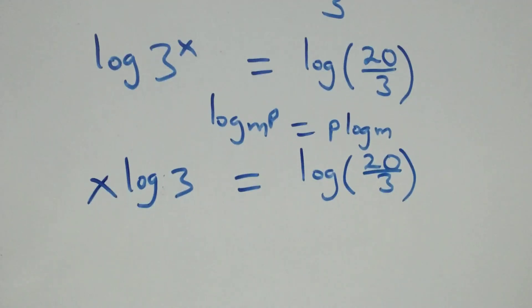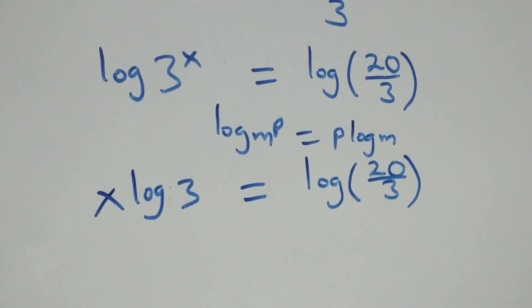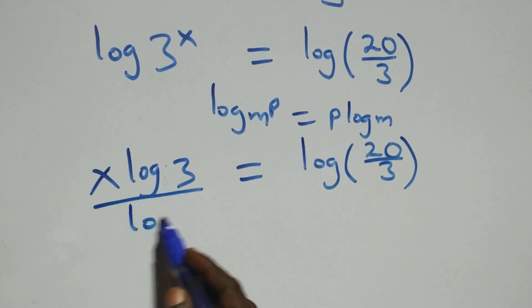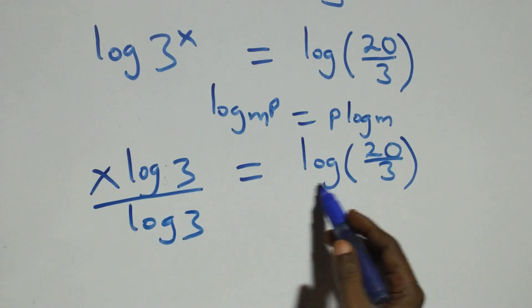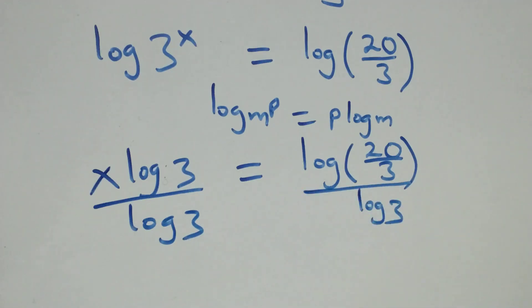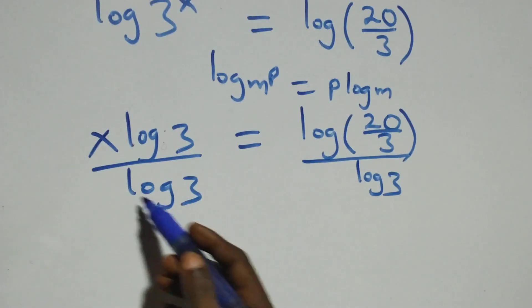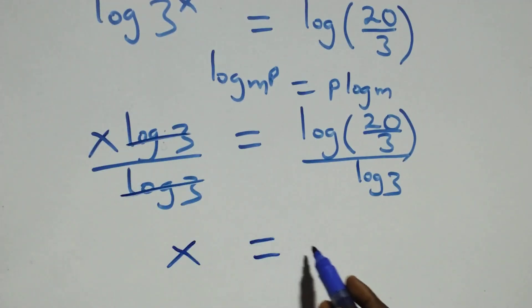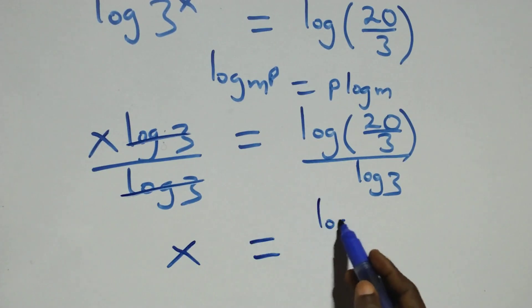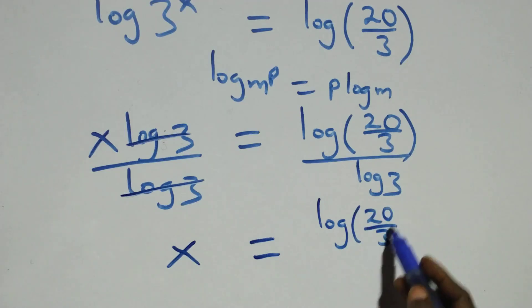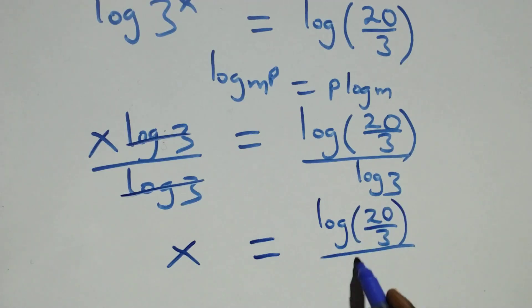The next step: we divide both sides by log 3. Log 3 cancels on the left side, giving us x equals log(20/3) divided by log 3.